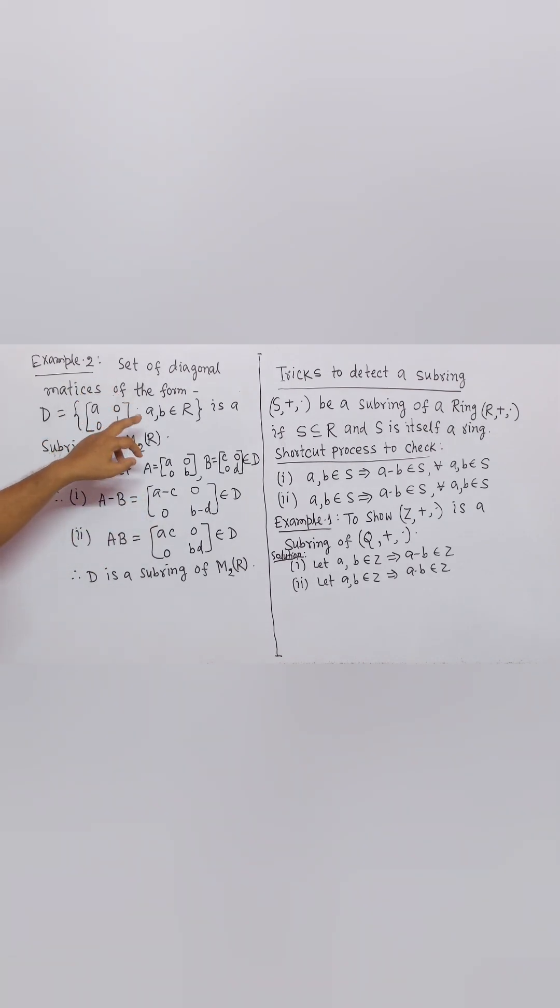Example 2. Set of diagonal matrices is a subring of M to R.